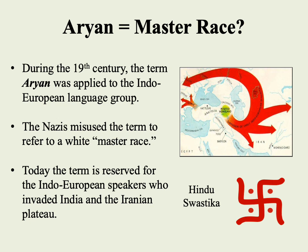Other groups continued to migrate further westward, eventually coming into Europe. Most European languages are also part of this Indo-European language group. That means Farsi spoken in Iran is in some ways more closely related to German than to neighboring languages like Arabic, even if it did borrow some words and eventually the script from Arabic. During the 20th century, the Nazis would misuse the term to refer to a white master race, even going so far as to adopt a Hindu symbol from India — the swastika — though they would modify it.